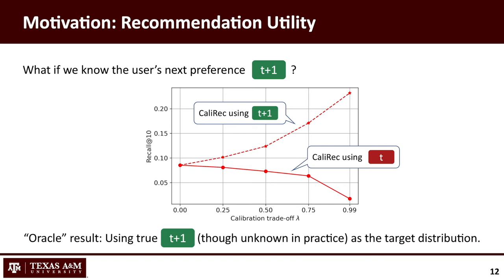To justify our hypothesis, we apply the conventional distribution-aware recommenders using the next preferences — the green one — as the target. Then, the recommendation utility is much better than the previous result using the red distribution as the target, and even much better than the result of the accuracy-driven recommendations. Of course, the next preference is unknown in practice, but through this test, we confirmed that choosing a good taste distribution as the target will greatly improve the recommendation utility.